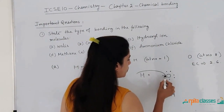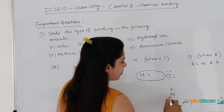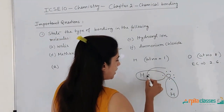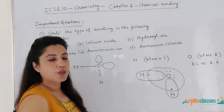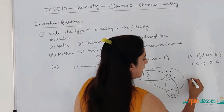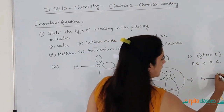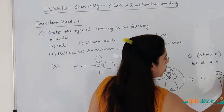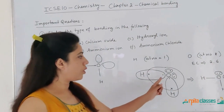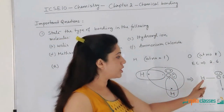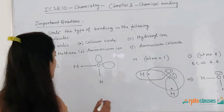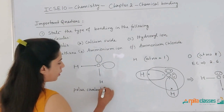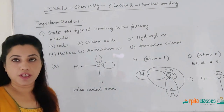Hydrogen has to complete its duplet, so it is taking one electron from oxygen. This hydrogen is also taking one electron from oxygen. Oxygen has to complete its octet, so oxygen will be taking two electrons from both hydrogens. We can see here there is a covalent bond and here there is a covalent bond. The two electron pairs which have not taken part in bond formation are called lone pair of electrons. There is also a lot of electronegativity difference between hydrogen and oxygen, so this covalent bond is a polar covalent bond. The answer for water is polar covalent bond.